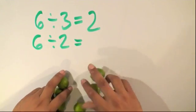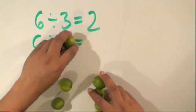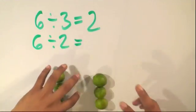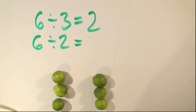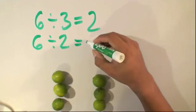So we'll arrange our limes here. And we have 1, 2 equal sets, and we have 1, 2, 3 limes in each set.